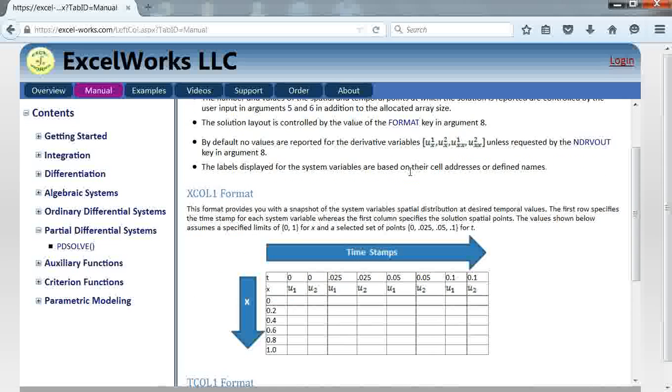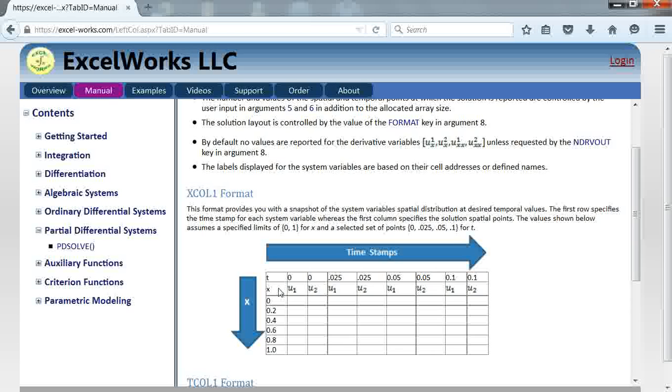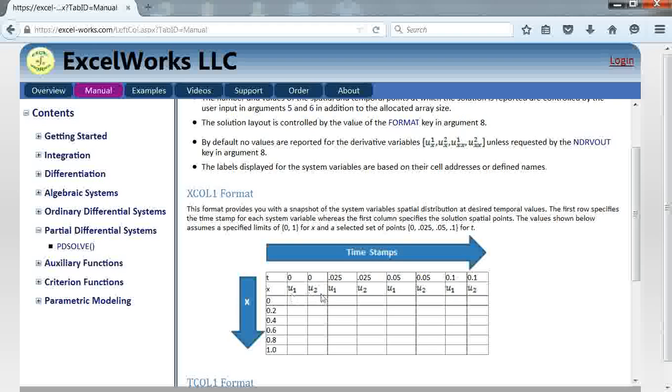One layout is called the xcall1 format and this layout basically divides up the range for the spatial variable according to the allocated number of rows and then divides up the time variable according to the allocated number of columns. The advantage of this format is you can easily snapshot view of any of the variables at selected points in time.